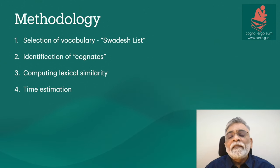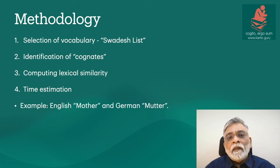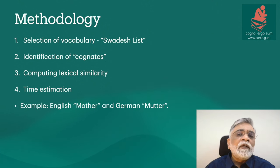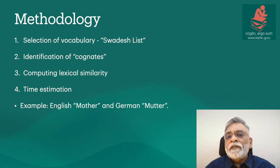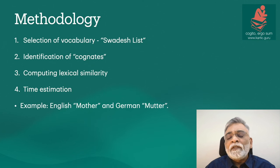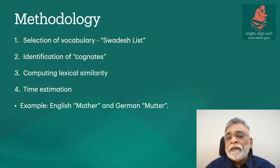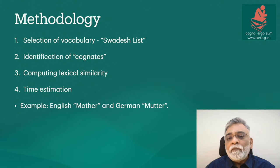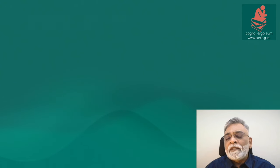The fourth step is time estimation: using a mathematical formula, the time at which two languages are thought to have diverged is estimated. For example, linguists might compare the English word 'mother' and the German word 'mutter,' which are cognates derived from Proto-Germanic. By examining such words across multiple languages within a language family, researchers can attempt to construct a timeline for when those languages diverged.